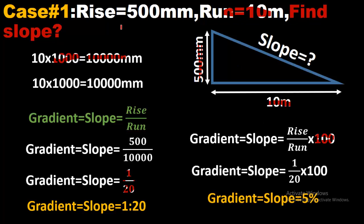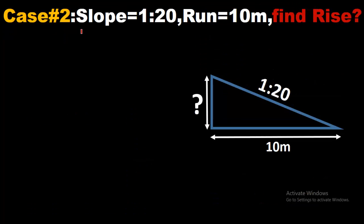That's how if rise and run are given you can find slope from these two values. Let's proceed towards case number two. In case number two, slope is given. We are solving the same problem so that you can compare the results. Slope is 1 ratio 20, run is 10 meters. Find rise.